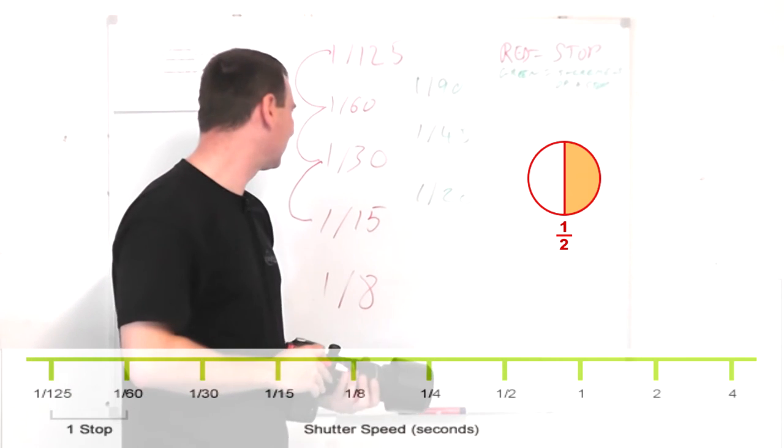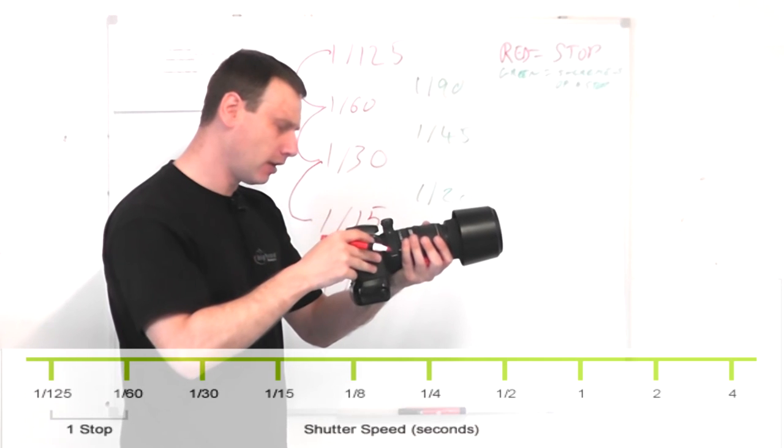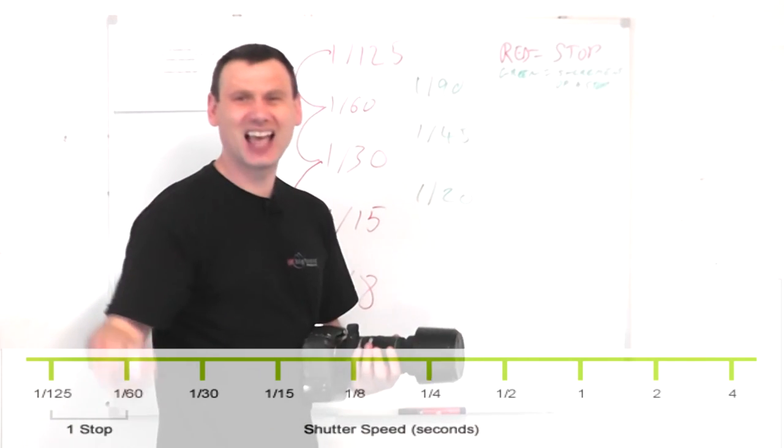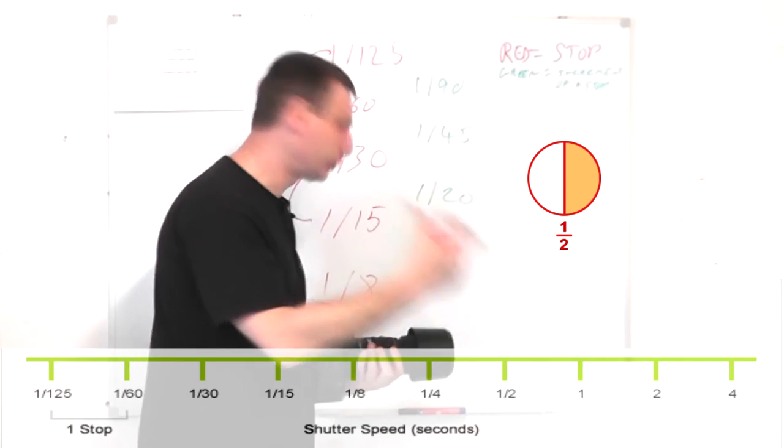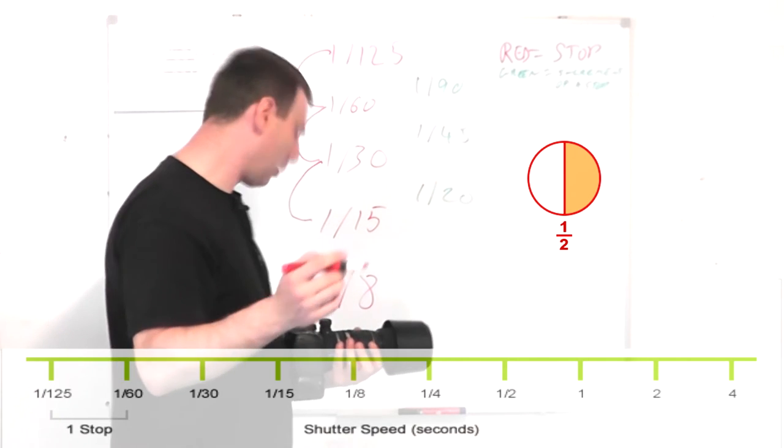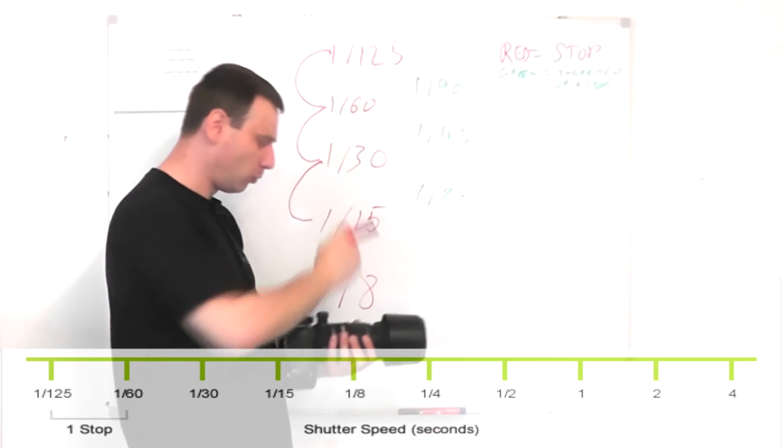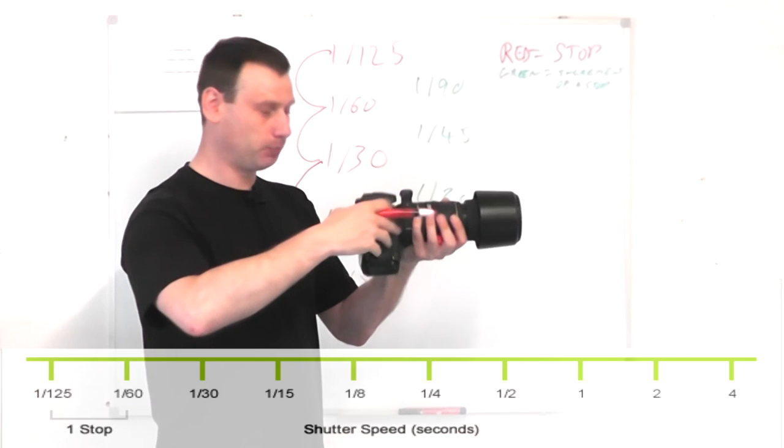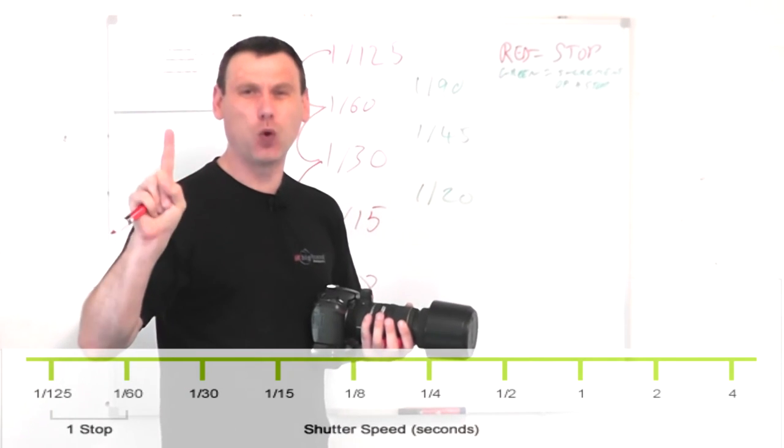And it's the same if we go to 1/30th and if I move from 1/30th, I get 1/20th of a second. Again 1/20th of a second being half a stop. Because if I wanted a full stop I would have had to have gone from 1/30th of a second all the way to 1/15th of a second. So this means that I would have had to move the wheel dial twice instead of moving it once.